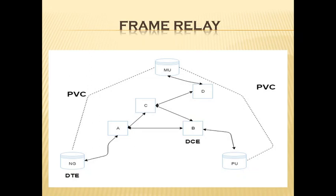The image shows two PVCs — one from Nagpur to Mumbai and a second from Mumbai to Pune. PVCs, or Permanent Virtual Circuits, are permanently established connections used for frequent and consistent data transfer between DTE devices across the Frame Relay network. Communication across a PVC does not require the call setup and termination steps that are used for SVCs.